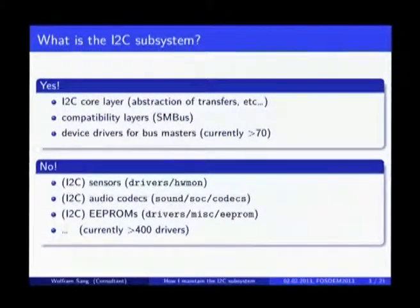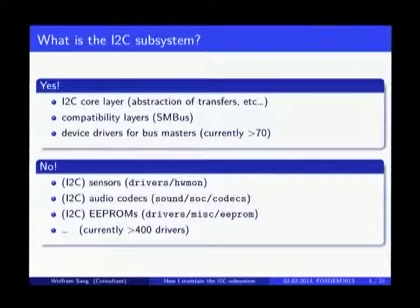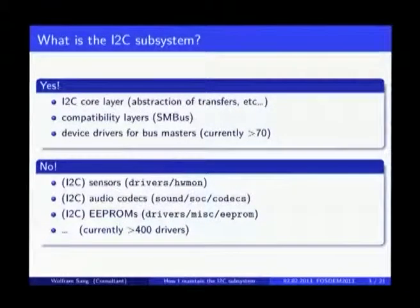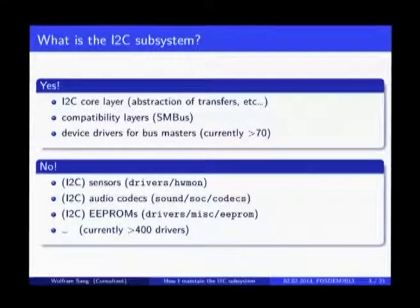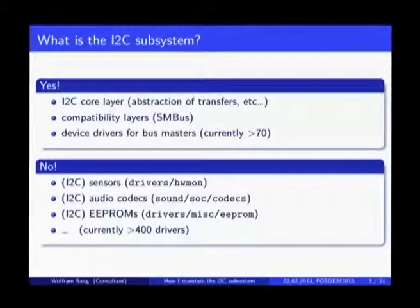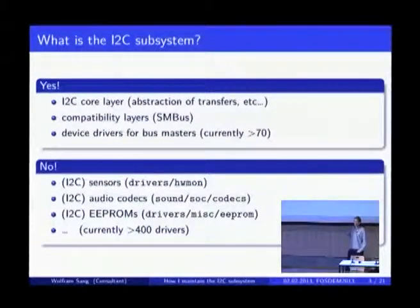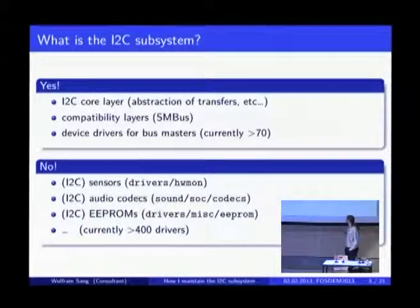I also take care of the master drivers. We currently have approximately 70 different master drivers in the Linux kernel, mainly because every ARM chip usually has its own I2C controller — and we just heard a talk about ARM chips. They are all handled in the I2C subsystem. Not handled are the slave devices, the sensors. Those are located in the hardware monitoring section of the Linux kernel.